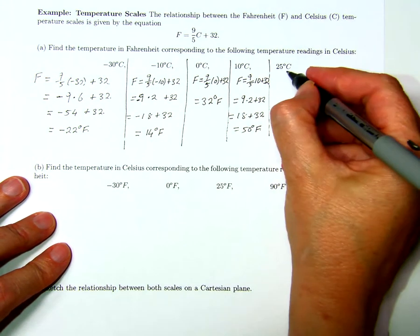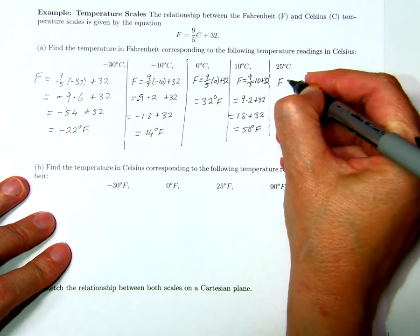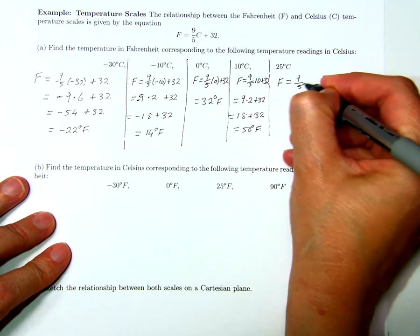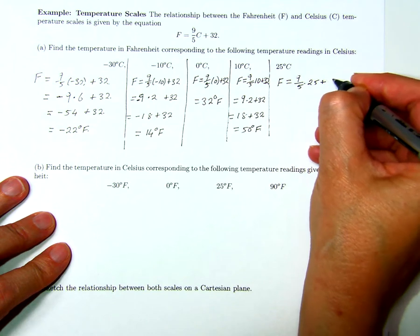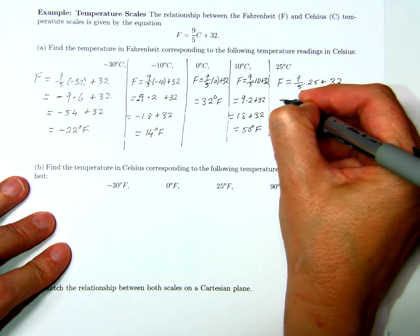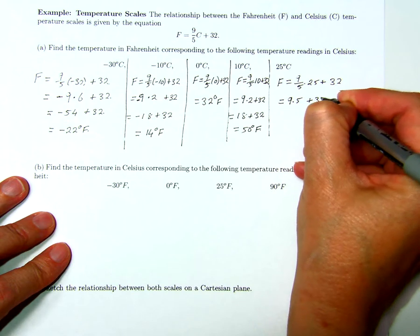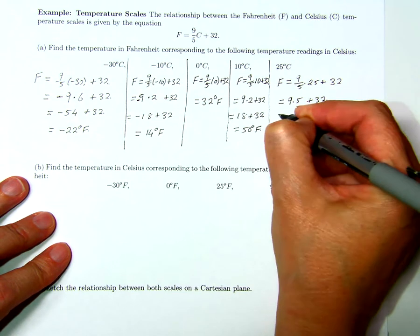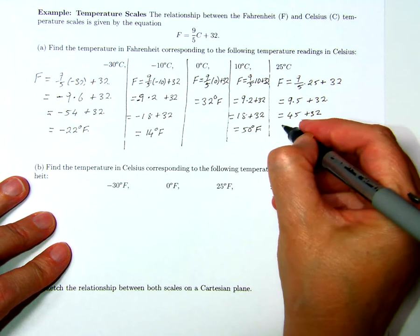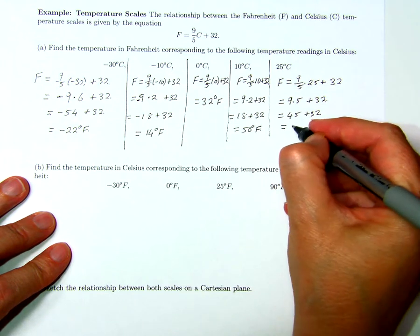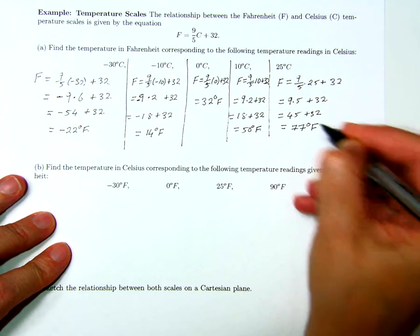When the Celsius reading is at 25 degrees, the Fahrenheit reading is 9 over 5 times 25 plus 32, and that's equal to 9 times 5 plus 32, which is 45 plus 32, and that's equal to 77 degrees Fahrenheit.